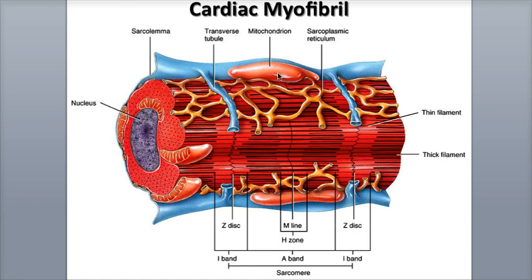The larger and more abundant mitochondria in cardiac muscle fibers gives this tissue the ability to obtain most of its ATP through aerobic cellular respiration.